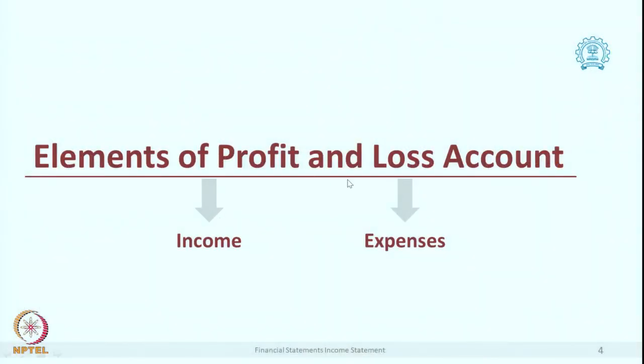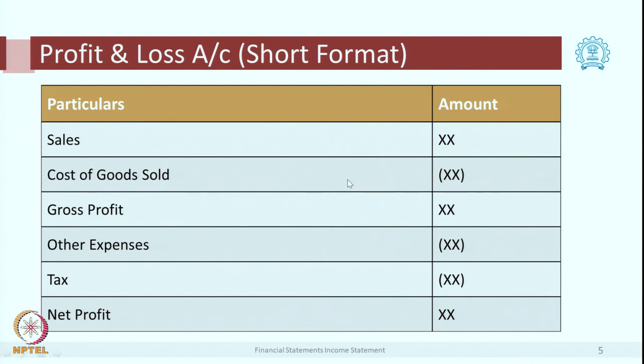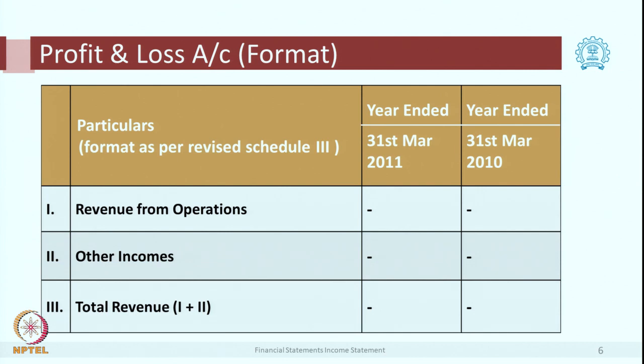As you all know, profit and loss account is a statement which gives you profit or loss, and in case of non-profit entities it is called as a surplus for a particular period. It has to list all incomes and all expenses. It has two parts: income part and expense part. This is a short form — a very simple form of P&L — and we have also seen a detailed form as per Schedule 3 of the Companies Act.